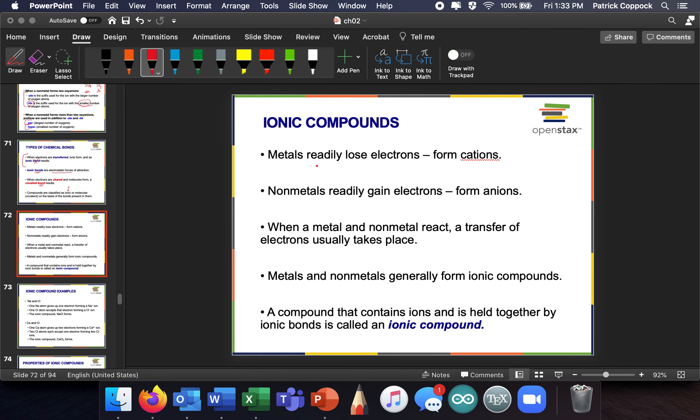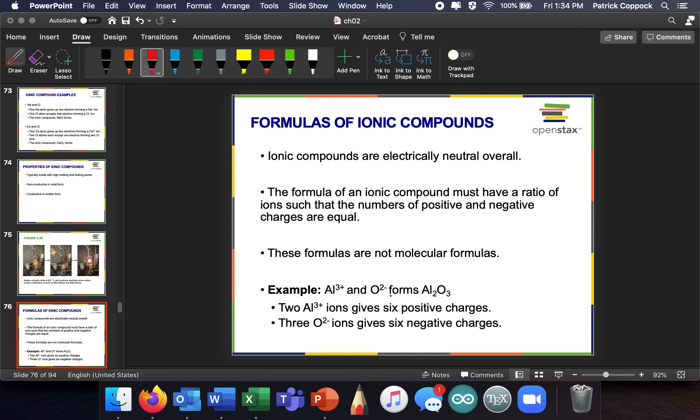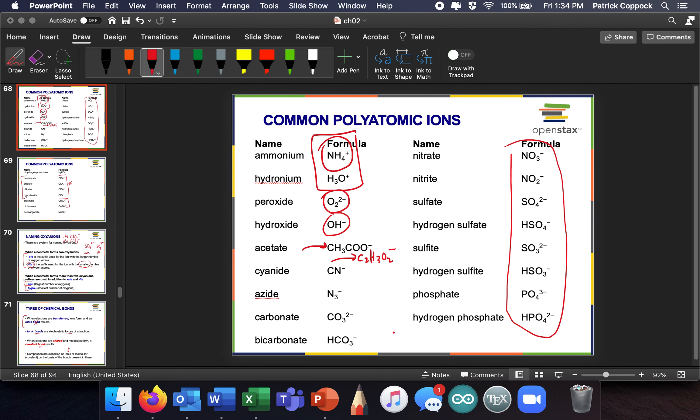So, metals readily lose electrons, and so they're going to form cations. Non-metals readily gain electrons, so they're going to form anions. If you have a metal and a non-metal, you're going to have a transfer. This is going to be ionic. Metals and non-metals generally form ionic compounds, so it becomes very easy. If you're looking at a formula and you see a metal, you know it's ionic. It's that simple. We're not going to deal with metallic bonds in this class, so we're going to keep it at that for now.